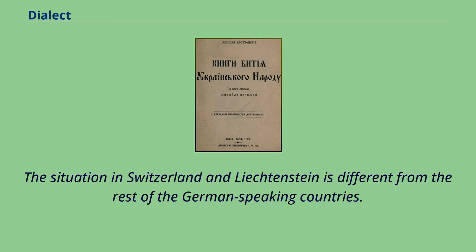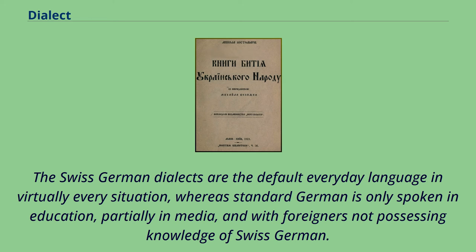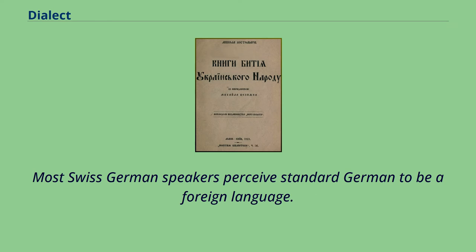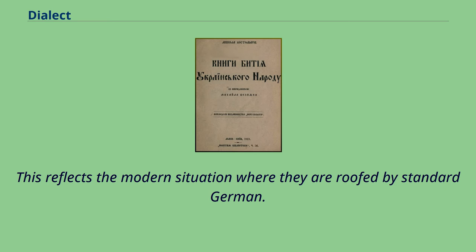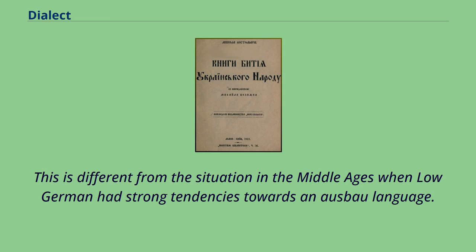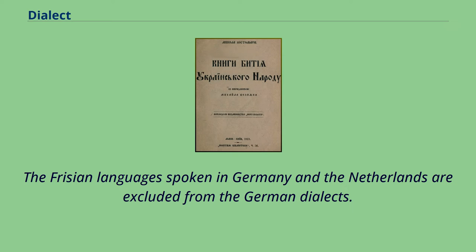The situation in Switzerland and Liechtenstein is different from the rest of the German-speaking countries. The Swiss-German dialects are the default everyday language in virtually every situation, whereas standard German is only spoken in education, partially in media, and with foreigners not possessing knowledge of Swiss-German. Most Swiss-German speakers perceive standard German to be a foreign language. The Low German and Low Franconian varieties spoken in Germany are often counted among the German dialects, while the Frisian language, spoken in Germany and the Netherlands, is excluded.